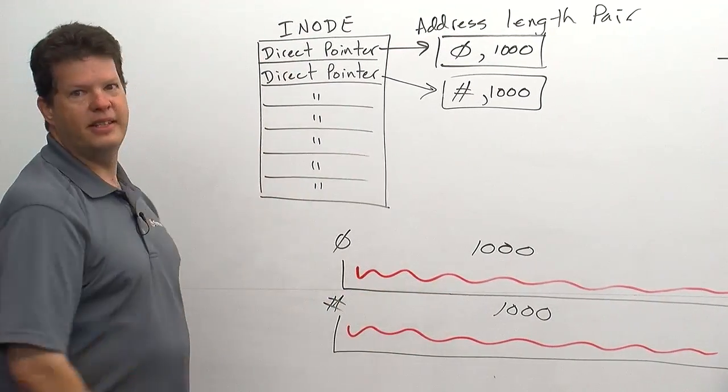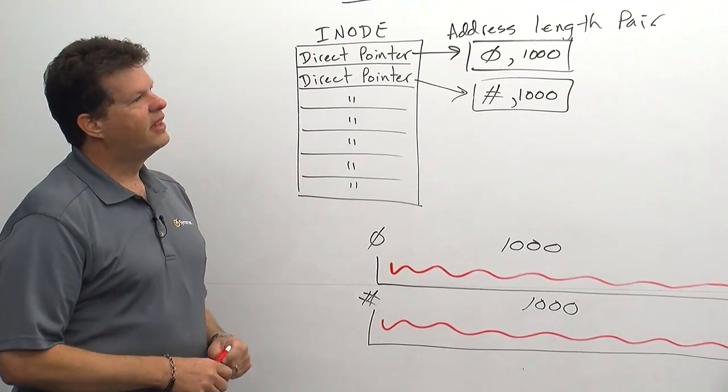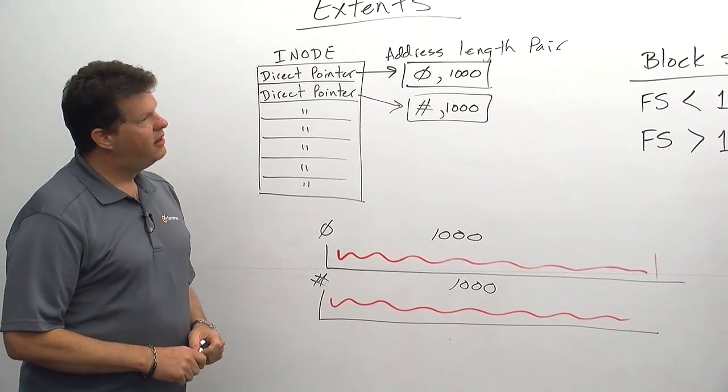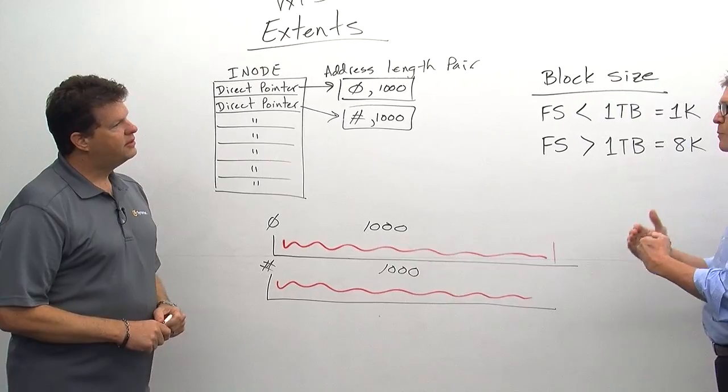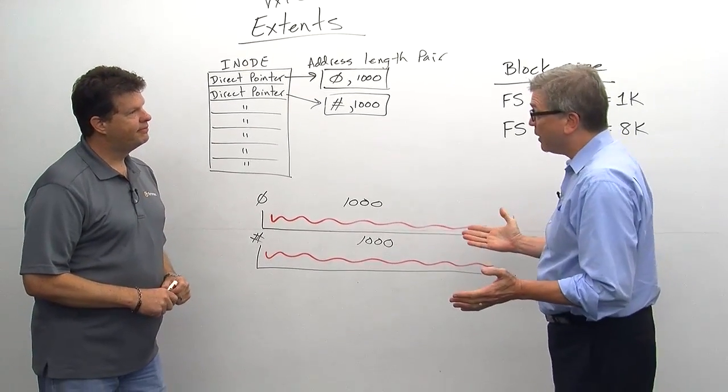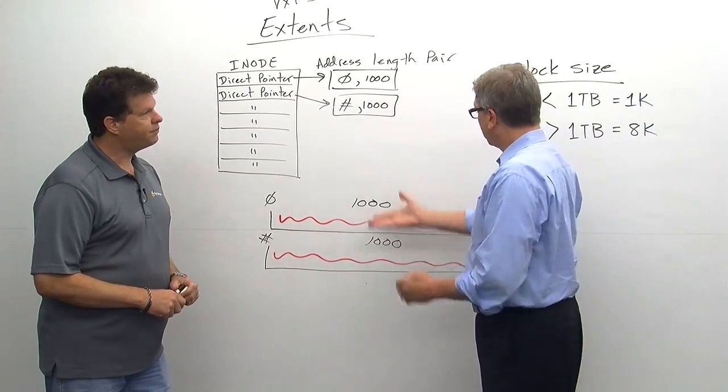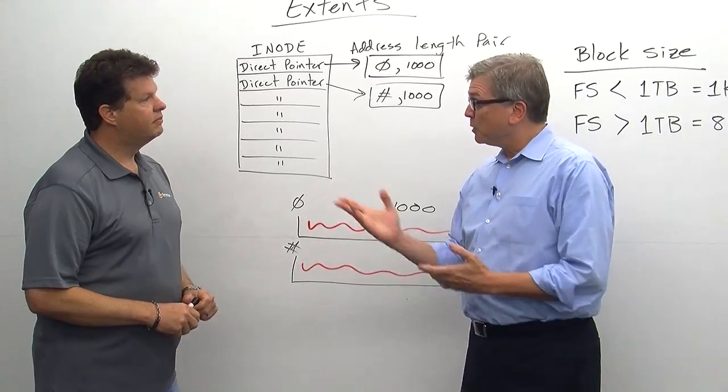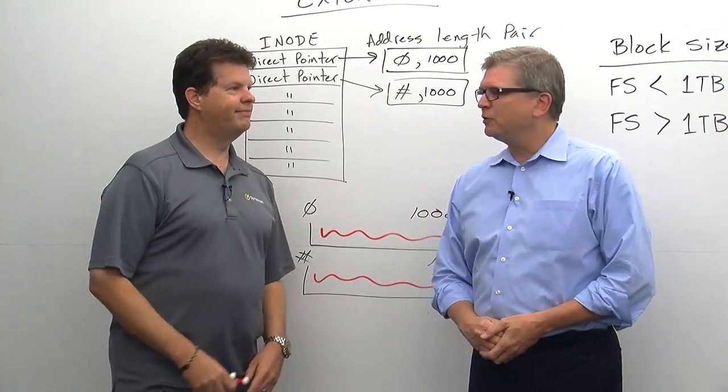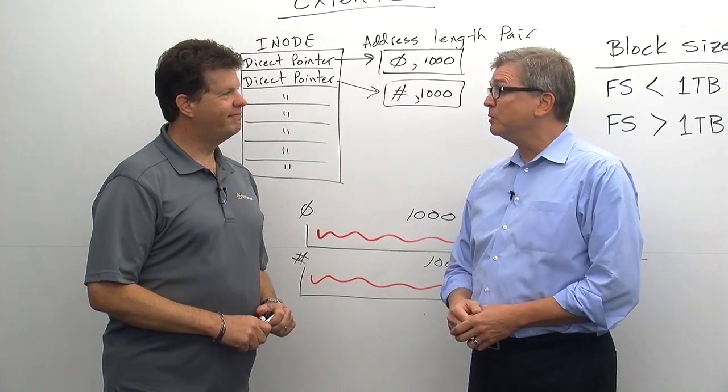And that's basically it. That's what an extent is. Well, that's a very good point when you're starting to think about the block sizes. You really have to be careful about what are the size of the files that are going in there. Absolutely. This is a great explanation of it. I really appreciate you taking the time and explaining to us how Veritas file system extents work.